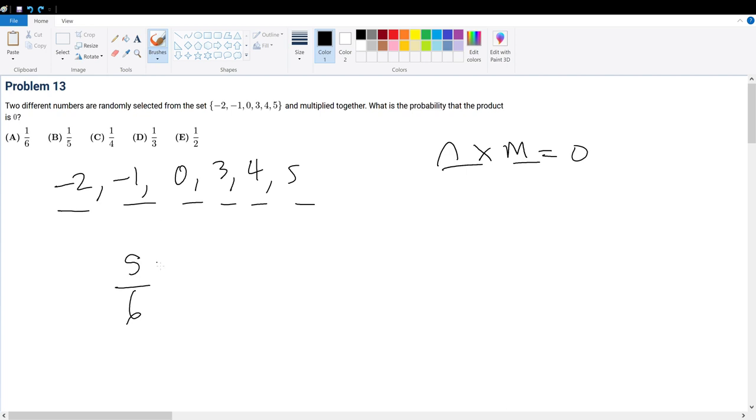Or let's solve by complementary counting. We have 5 over 6 ways, right? 5 over 6 ways the probability of choosing a non-zero number. So what is the other probability of choosing a non-zero number?